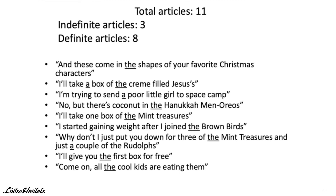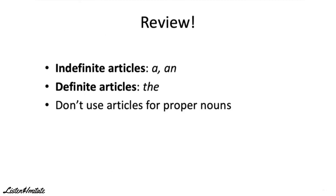Well done, everybody — we finished our last practice. Now time for review. There are three articles in the English language: A, An, and The, and they must always be used with singular countable nouns. A and An are indefinite articles that refer to nonspecific nouns — we use A in front of a consonant and An in front of a vowel. The is a definite article used to refer to a specific person or thing, or in front of an uncountable noun.